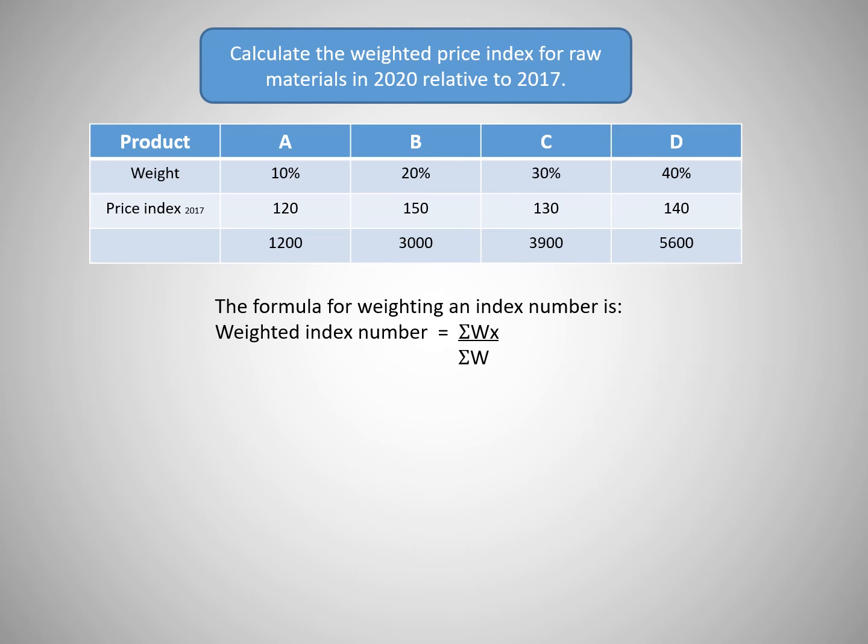Next, we sum or add up our answers and divide by 100 in order to get an average percentage change. So, 13700 divided by 100 gives us a weighted index number of 137.